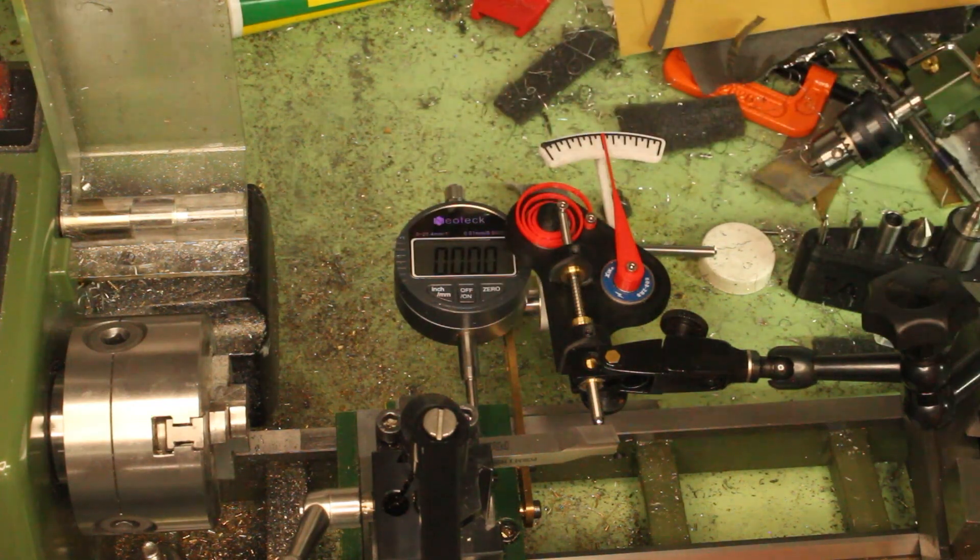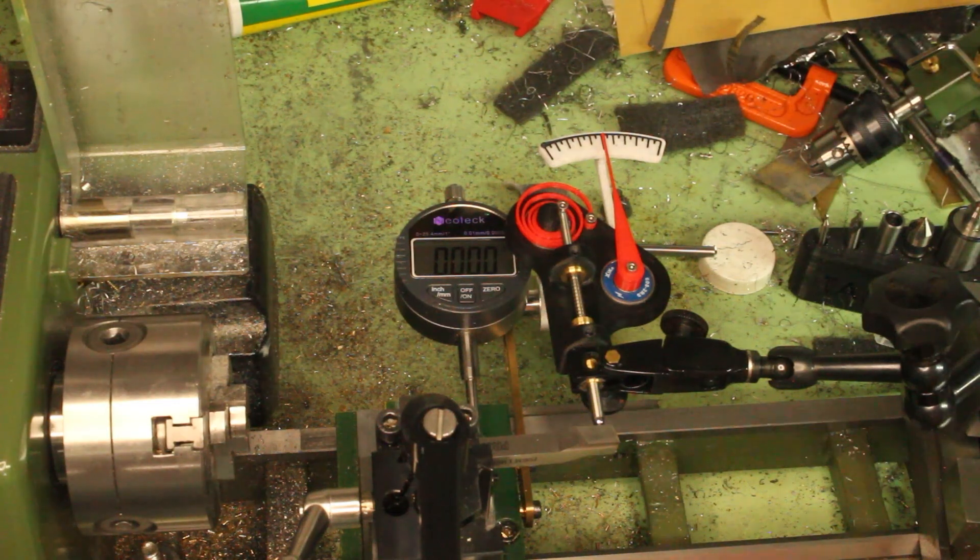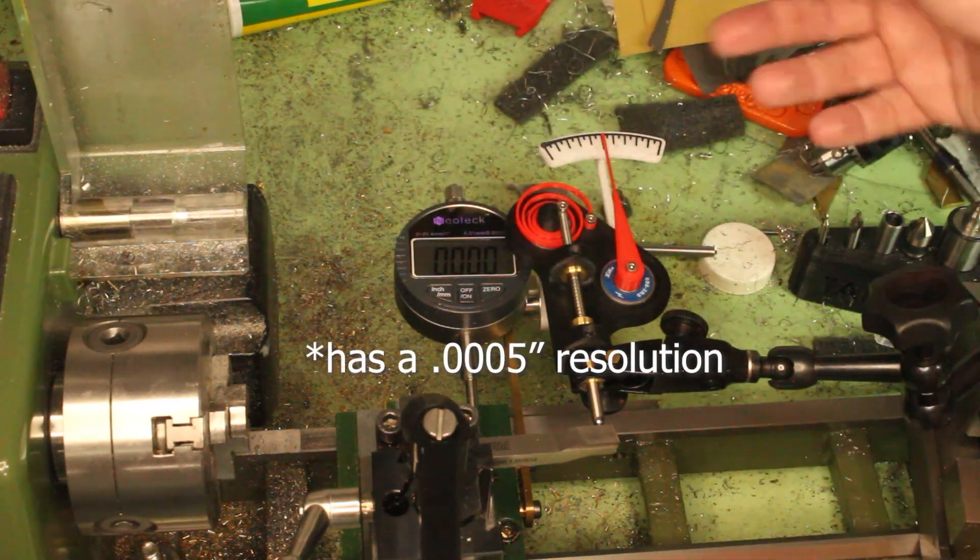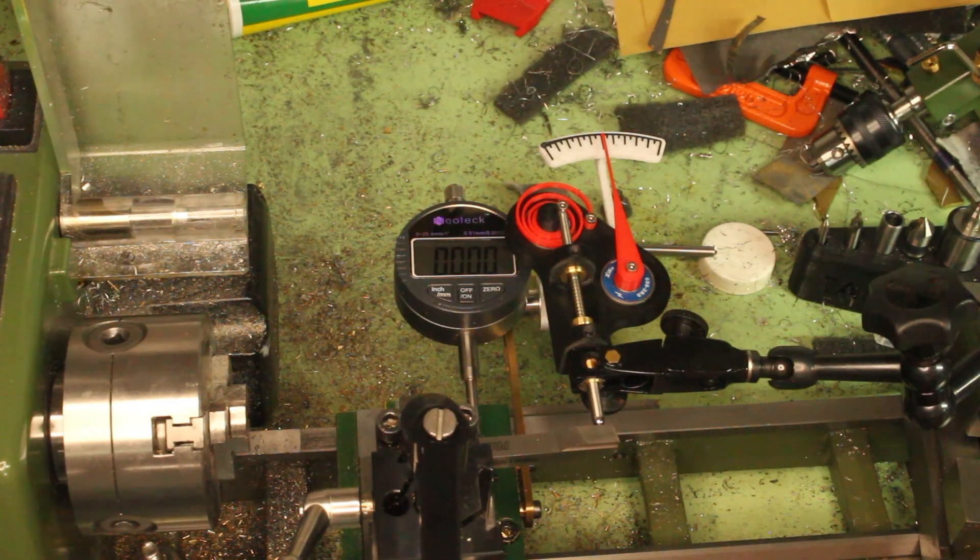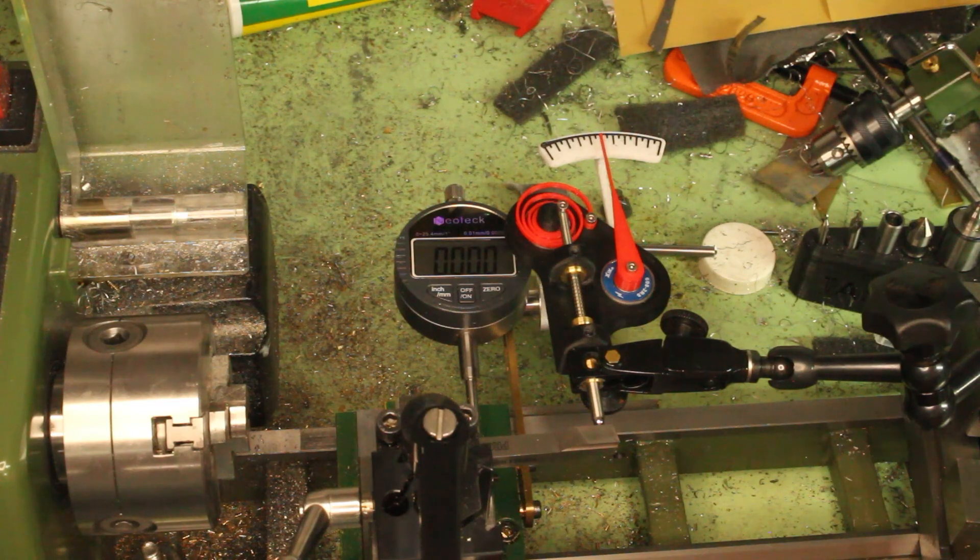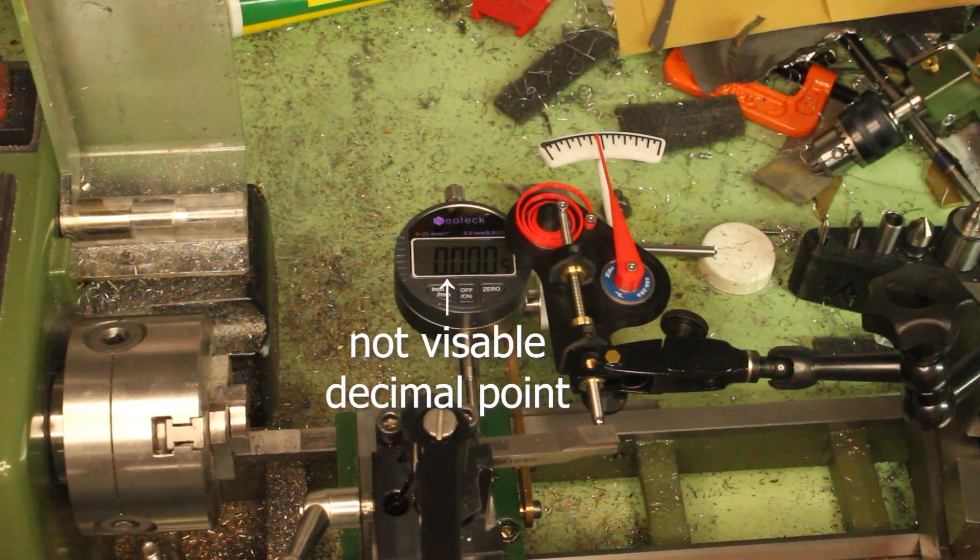Okay, zero there. So each graduation on here is five tenths. This thing is only accurate to five tenths. You know, if I get a thou out of this I'm going to be really happy. Let's just see how it goes. We don't have anything great to compare it to. Part of the problem here... Oh my god, did you see that? It's beautiful, all right.